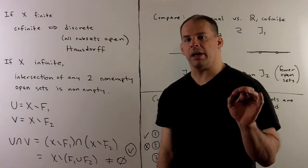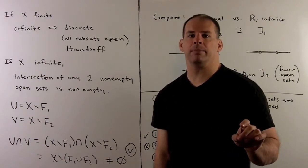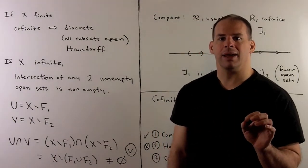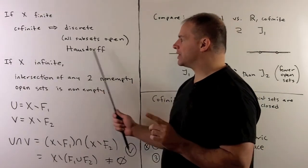If our space is finite, then the complement of any finite subset is also finite. So every closed subset is also open. That means we're working in the discrete topology, so our space is Hausdorff.